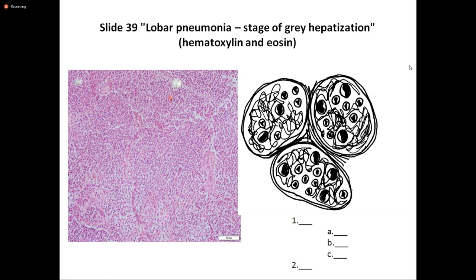Number 1A is fibrin — fibers of fibrin. Number 1B — neutrophils. Neutrophils are the main cells of acute inflammation. Number 1C — macrophages, which are the larger cells. Number 2 — alveolar septum. This is the septum between two alveoli.